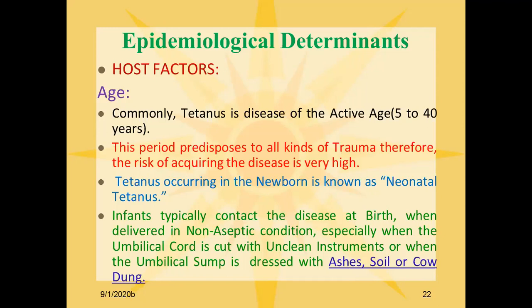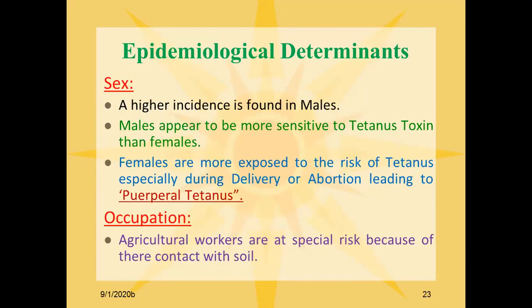Tetanus occurring in newborns is known as neonatal tetanus. Infants typically contract the disease at birth when delivered in non-aseptic conditions, especially when the umbilical cord is cut with an unclean instrument or when the umbilical stump is dressed with ashes, soil, or animal dung. A higher incidence is found in males, who appear to be more sensitive to tetanus toxin. Females are more exposed to the risk of tetanus especially during delivery or abortion, leading to puerperal tetanus. Agricultural workers are at special risk due to frequent contact with soil.